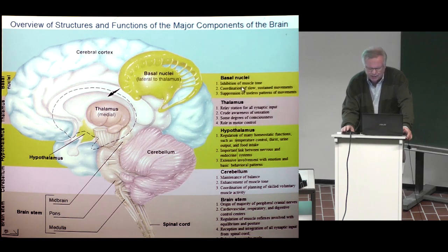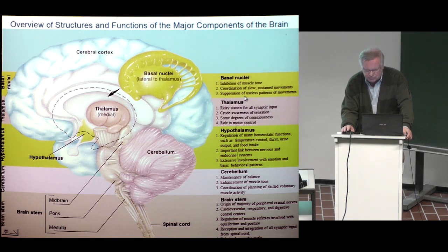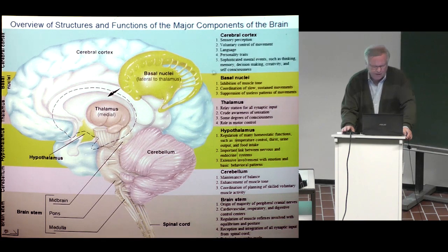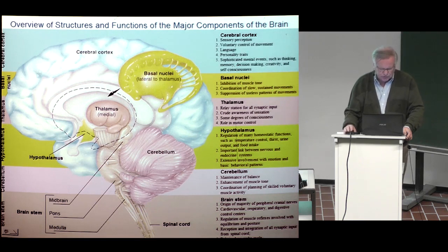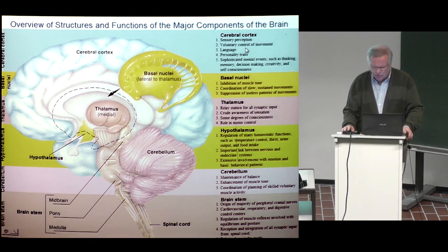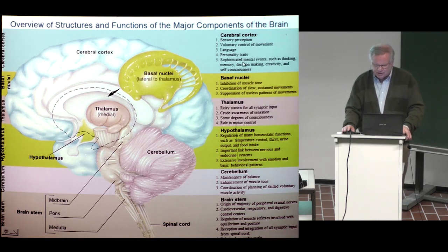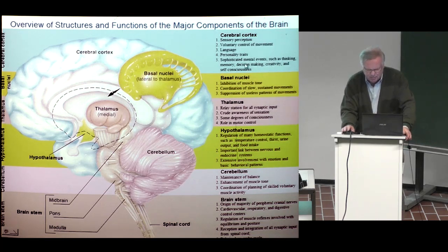The basal nuclei have inhibition of muscle tone, coordination of slow sustained movements, and suppression of useless patterns of movement. Finally, on the cerebral cortex — the surface layer of the brain — sensory perception, voluntary control of movements, language, personality traits, and sophisticated mental events such as thinking, memory, decision making, creativity, and self-consciousness.